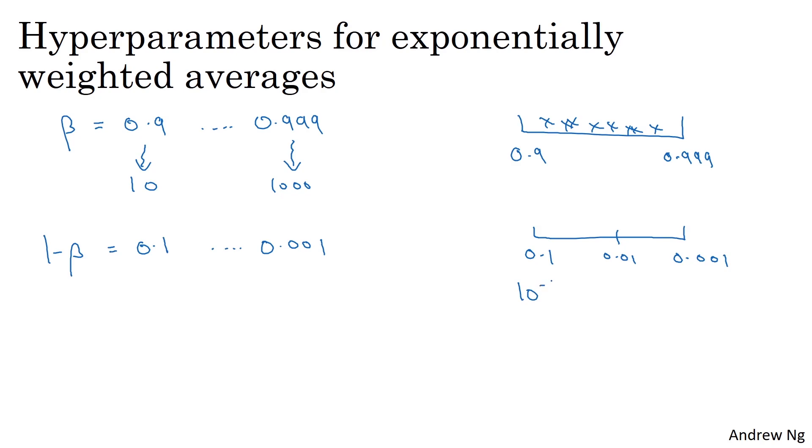So using the method we have figured out on the previous slide, this is 10 to the minus 1, this is 10 to the minus 3. Notice on the previous slide we had the small value on the left and the large value on the right, but here we have it reversed. We have the large value on the left and the small value on the right. So what you do is you sample r uniformly at random from negative 3 to negative 1 and you set 1 minus beta equals 10 to the r. And so beta equals 1 minus 10 to the r.